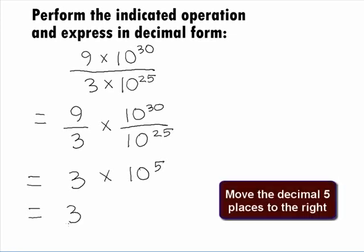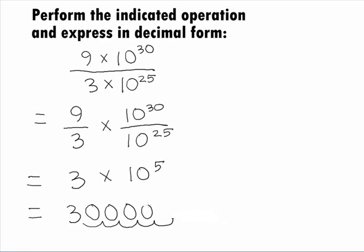Since we are multiplying times 10 to the power of 5, it looks like we need to move our decimal place 5 units to the right. This will give us our final answer of 300,000.